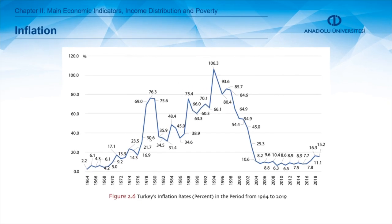When we look at inflation, from 1970 to about 2003 or 2004 there was a high inflation era — notably in 1994 the inflation rate reached 106.3 percent. After 2016 we see a slight increase in the inflation trend again, which is not as high as the previous era, but nevertheless represents an increasing inflation trend more recently.